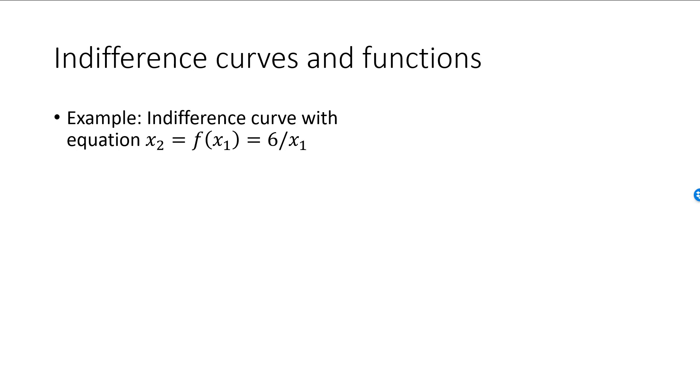Let's consider one more example. My indifference curve is the graph of the function x2 is equal to 6 divided by x1, where x1 now must be strictly greater than 0. Here is the graph of this function. Plugging x1 equal to 1 into the function will give me x2 equal to 6. Therefore, the bundle (1, 6) is on the indifference curve.